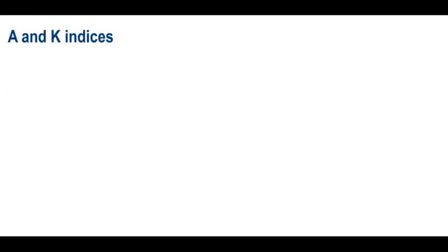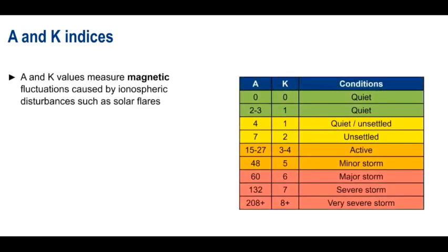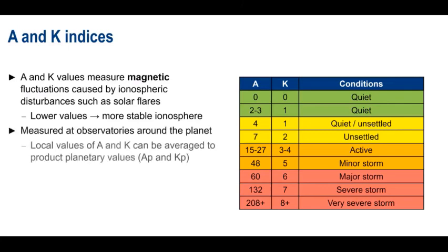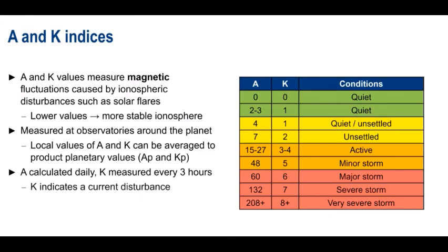Sunspot number and solar flux index can be used to quantify ionospheric conditions, but to quantify geomagnetic conditions, we use A and K indices. In general, lower values for A and K mean a more stable ionosphere, although, as we just mentioned, in some cases a geomagnetic storm may not lead to an ionospheric storm. A and K are measured at observatories around the planet, and these local values can be averaged to produce planetary values. One of the biggest differences between these two indices is that A is calculated daily, whereas K is measured every three hours. Higher values of K indicate a current or ongoing geomagnetic event, whereas A is useful in knowing how long this disturbance has been occurring.